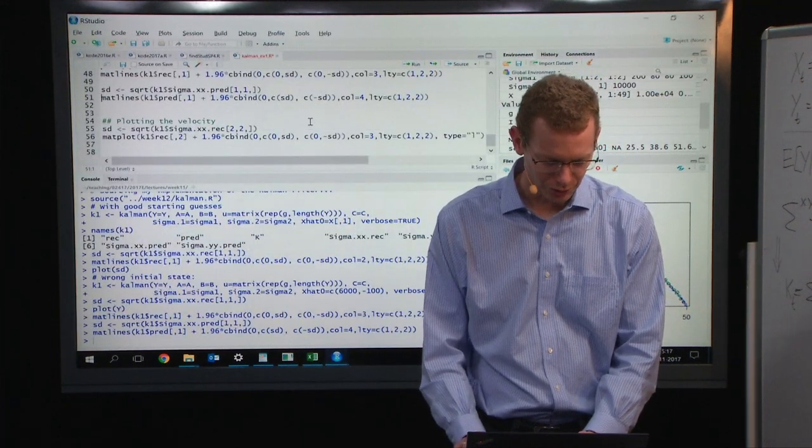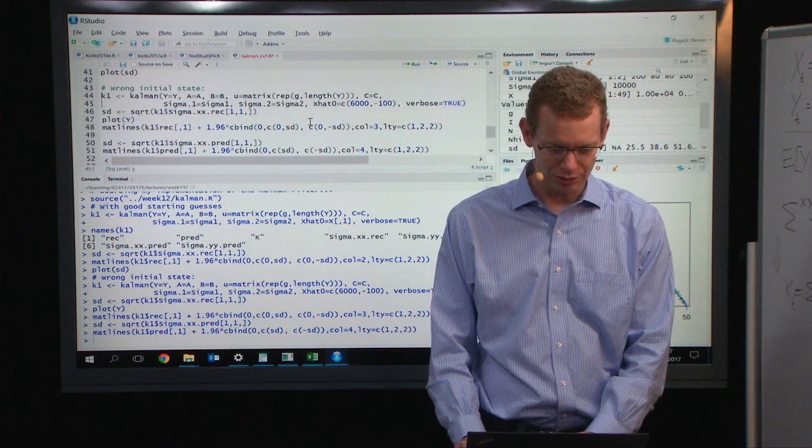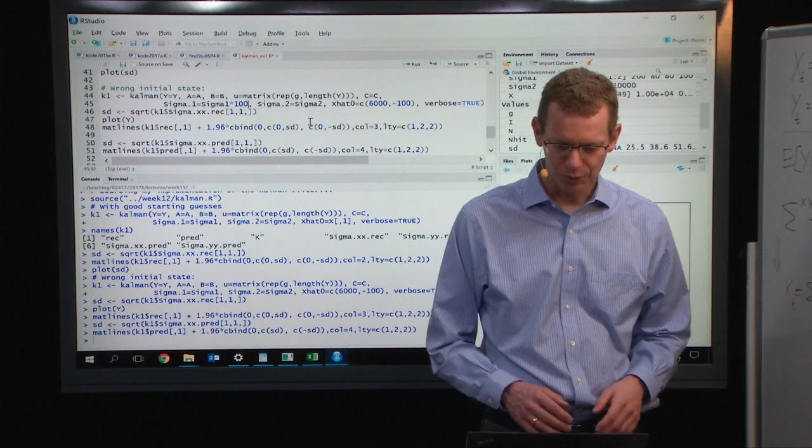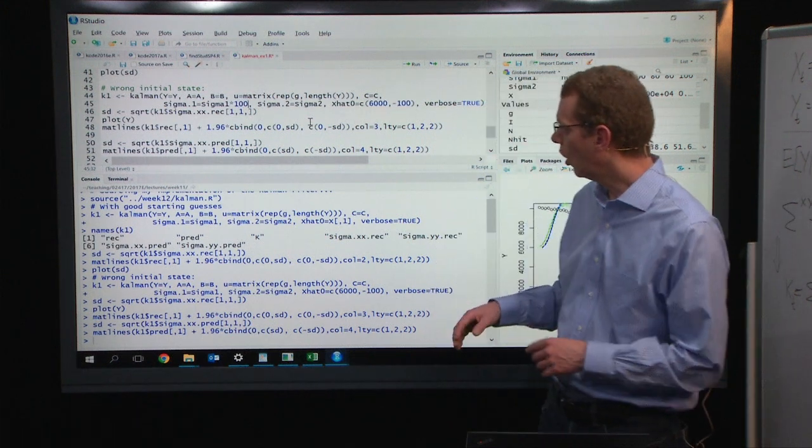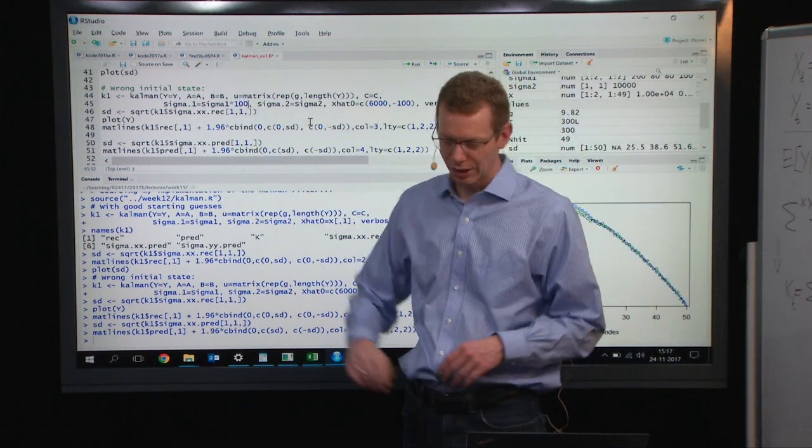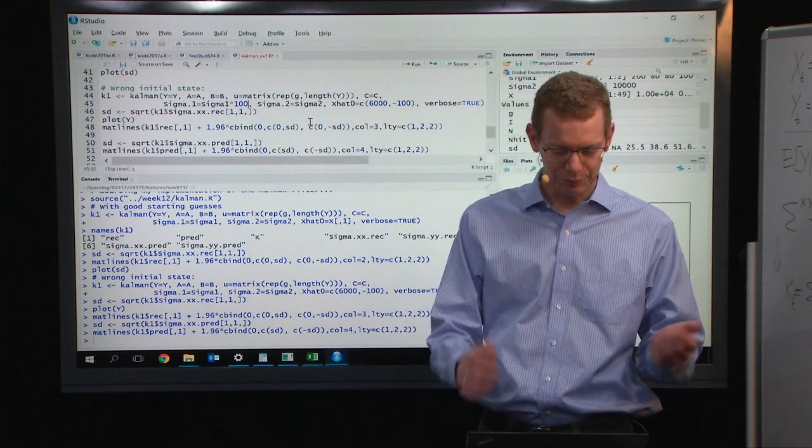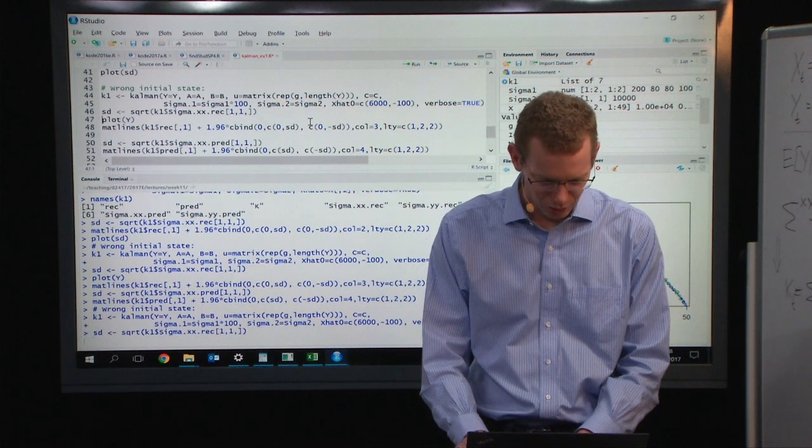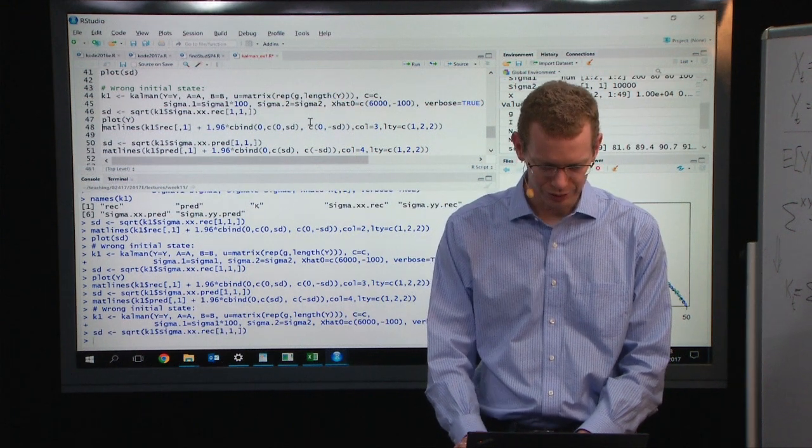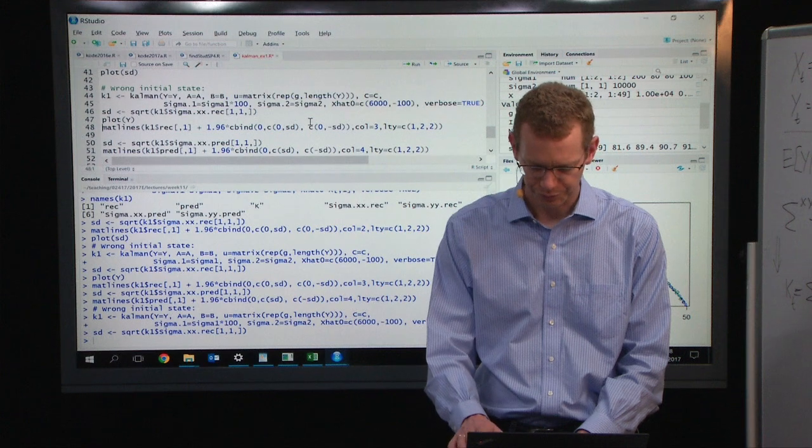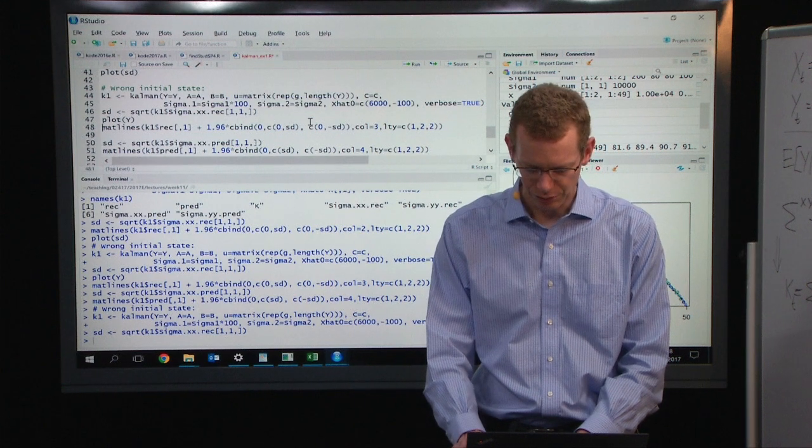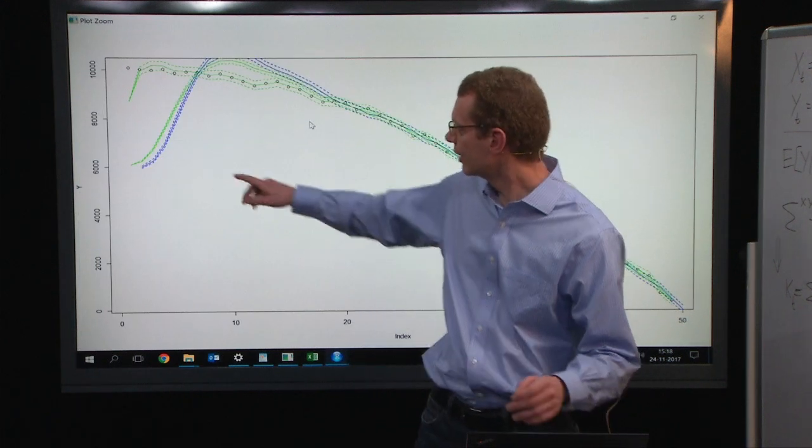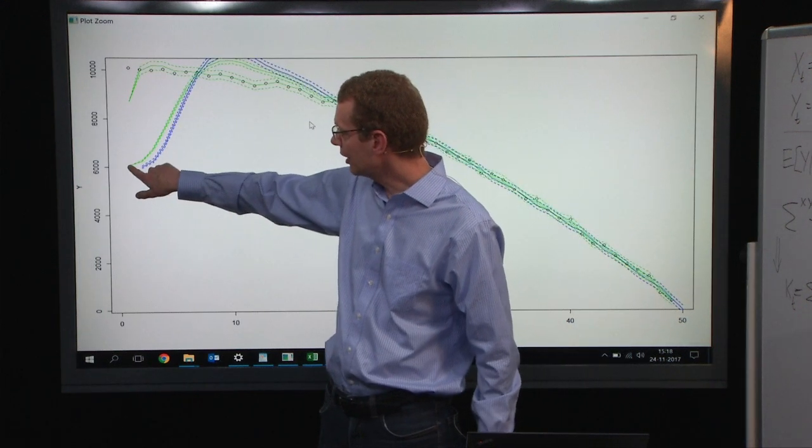Just to show you what happens if, instead of assuming we know exactly where we are in the beginning, we say we make the uncertainty on sigma one, the variance, inflate that by a factor of 100. Then we do the same plot of the reconstruction. They'll be green again, but what you'll see is the second one here, we started down here, but the first update brings us very far because we said we didn't really trust where we were.